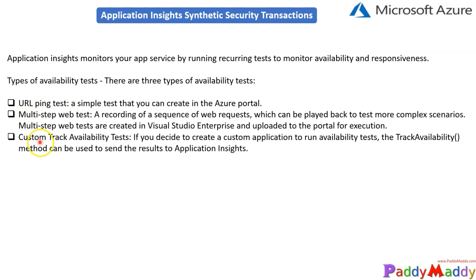When it comes to availability tests, you have three different options. The first one is the URL ping test, which is a simple test you can create within the Microsoft Azure portal to test a single URL. You can set intervals of five minutes or one minute to verify, and you get the output as an alert as well.